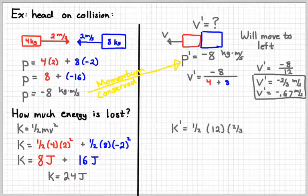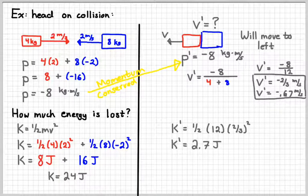After the collision, I've got one object, so I only need to do one kinetic energy equation, whose mass is 12, and the velocity is two-thirds, and so the final kinetic energy is like 2.7 joules.